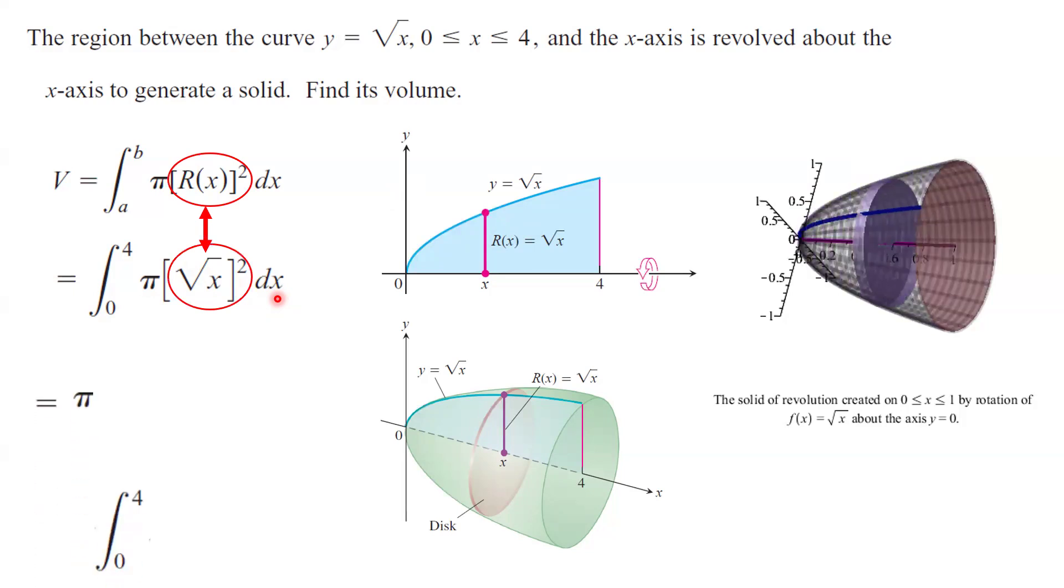So, r(x) to the second is square root of x to the second power. This, in turn, is π, definite integral of x dx, as x ranges between 0 to 4. Basically, this is π times x² divided by 2, x ranges between 0 and 4.